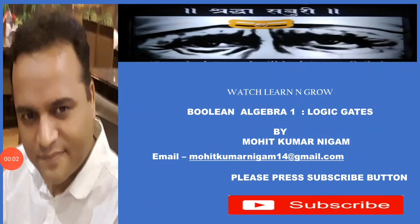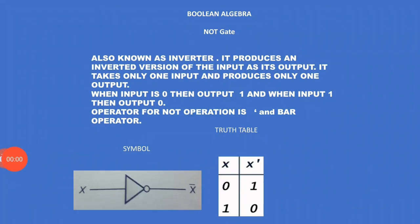Hi everyone. In this video I am going to discuss logic gates. NOT gate, also known as inverter — it produces an inverted version of the input as its output. It takes only one input and produces only one output. When input is zero, you can see in the truth table the output is one.